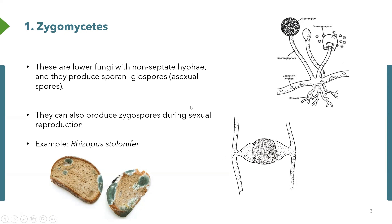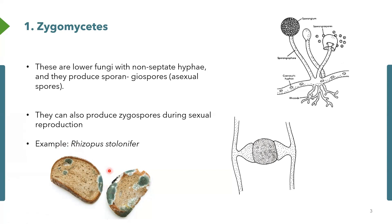That is actually the reason why this class is called zygomycetes, because it's the zygospores that are produced during sexual reproduction. A classical example is the common bread mold, which is called Rhizopus. Rhizopus stolonifer is a classical example of a fungus in this class.